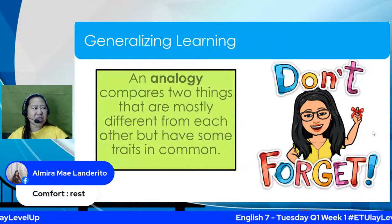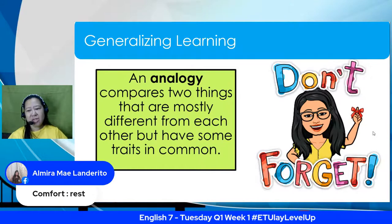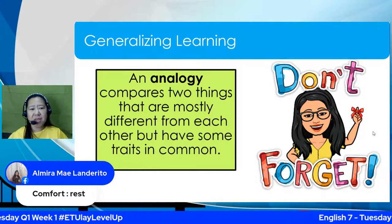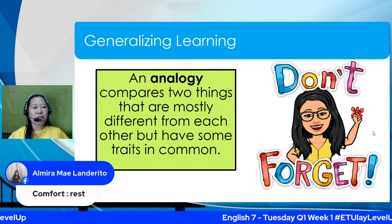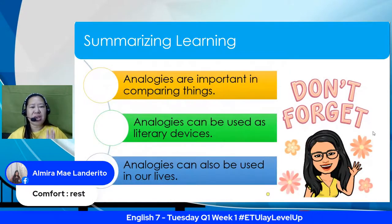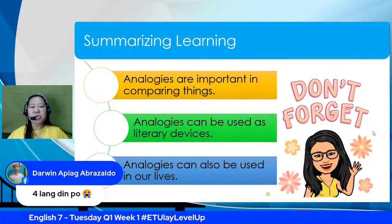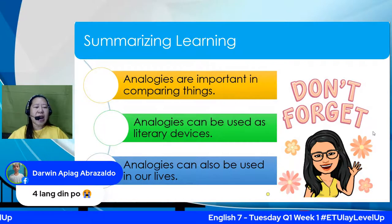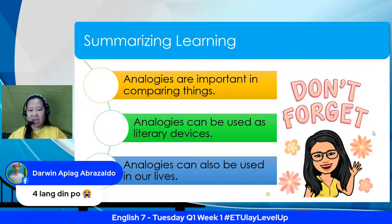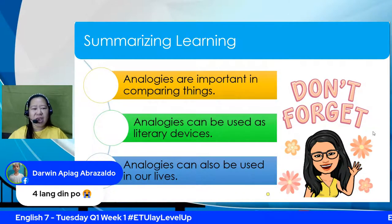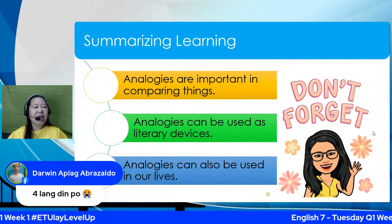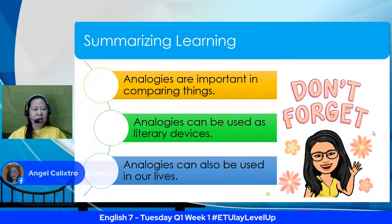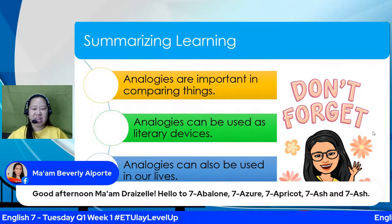Please don't forget that an analogy compares two things that are mostly different from each other but have some traits in common. Don't forget that you'll be using that in your lesson in Grade 7 and in your real life. As a summary: analogies are very important in comparing things. Analogies can be used as literary devices, and analogies can also be used in our lives. Darwin, if you got only a four, it's okay — we still have a lot of activities in store for you this quarter, and I know you can do good in the next activities.